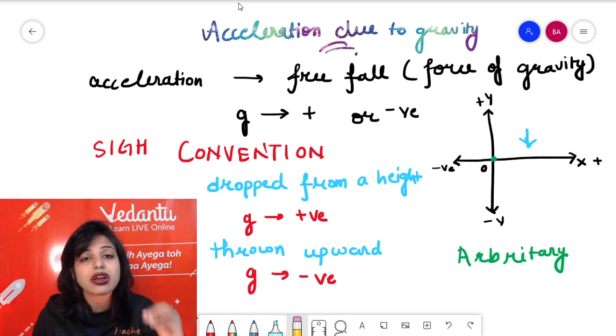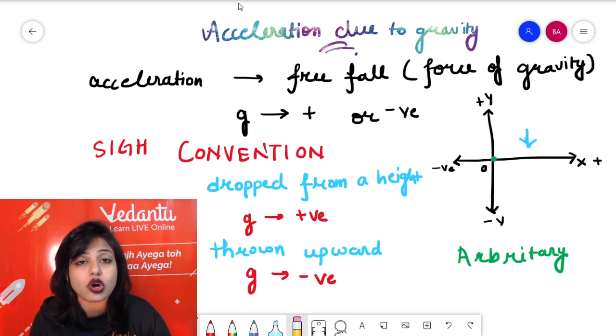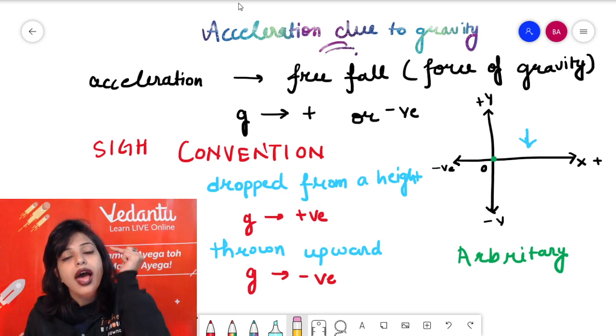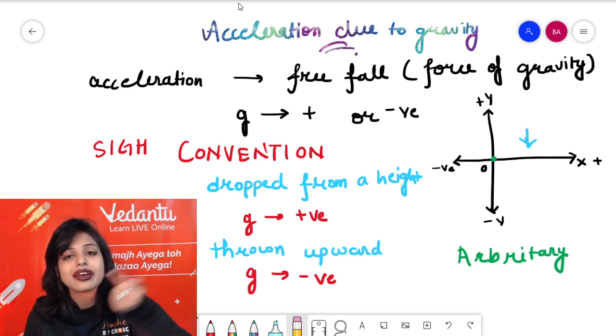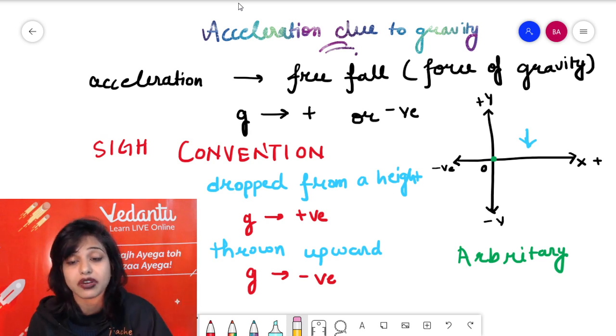If I put my Cartesian coordinate on the building itself instead of on the ground, the body being dropped and the height - the g and h will have the same sign. Hence, the sign of the final answer will not be different.